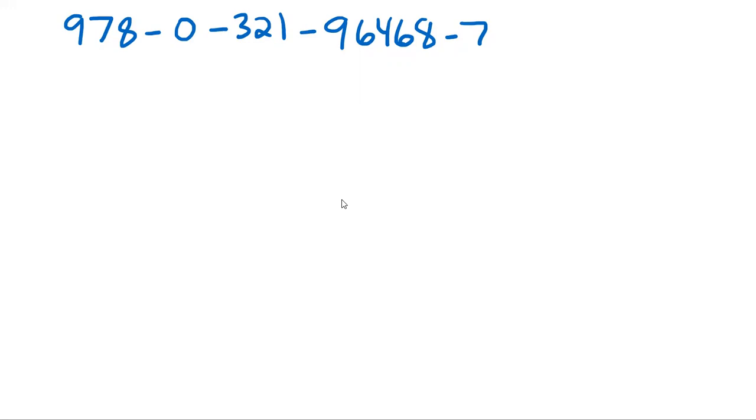So to do this, what we're going to do is you take the first digit, you times it by 1, you get 9. Second digit, you times it by 3, you get 21. Third digit times it by 1, you get 8. Then you keep this pattern going, times it by 3, that's just 0. Times it by 1, that's 3.